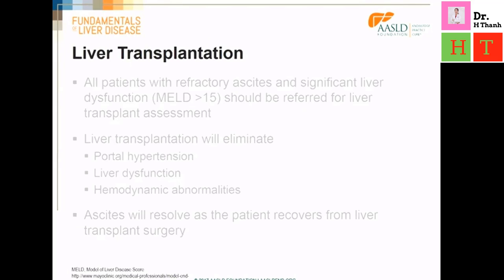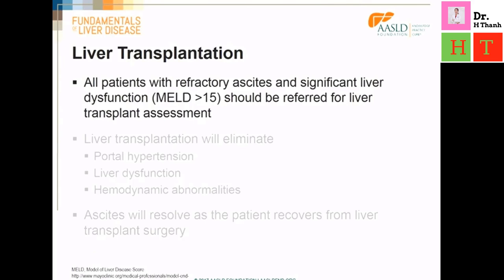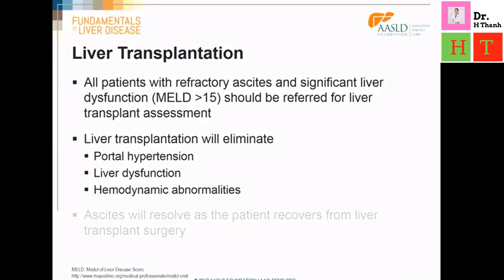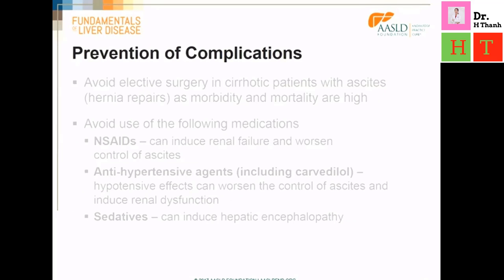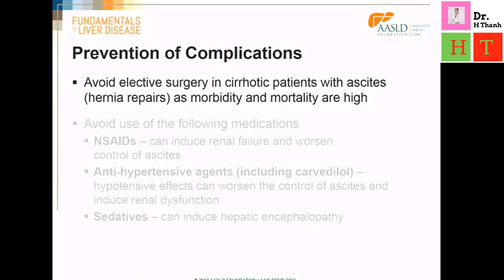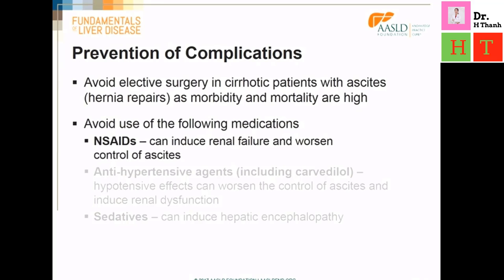Liver transplantation needs to be considered in all patients with refractory ascites and significant liver dysfunction as indicated by a MELD score of more than 15. Liver transplantation will eliminate portal hypertension, liver dysfunction, and hemodynamic abnormalities. The ascites will resolve slowly as the patient recovers from liver transplant surgery. While waiting for liver transplant, we need to do our best to avoid further complications. We need to counsel the patient to avoid elective surgery, no matter how minor it seems such as hernia repair, as any abdominal surgery is associated with significant morbidity and mortality. We also need to counsel the patient to avoid the use of non-steroidal anti-inflammatory drugs, as this may induce renal failure and worsen the control of ascites.